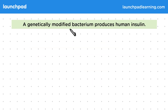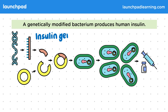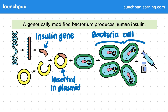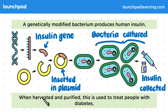A genetically modified bacterium produces human insulin. Essentially, a gene coding for insulin is placed into a plasmid and then inserted into a bacterium. The bacteria are then cultured and the insulin produced is removed and purified. When harvested and purified, this insulin is used to treat people with diabetes.